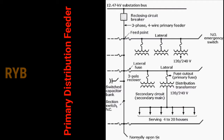In rural areas, a recloser is provided at specific locations in the feeder. A recloser is a device which provides automatic reclosing — unlike a circuit breaker, which opens the circuit but does not reclose automatically. A recloser is provided at various locations to remove the faulted section of the main feeder, and this is achieved through the coordination of all fuses and reclosers.